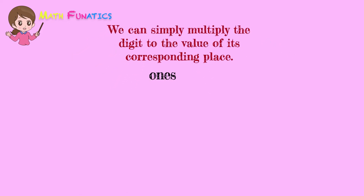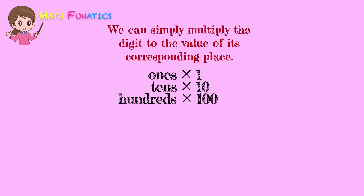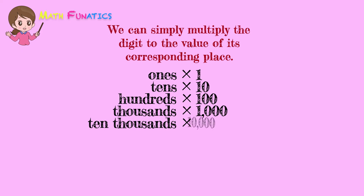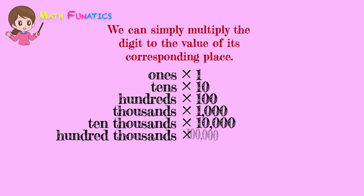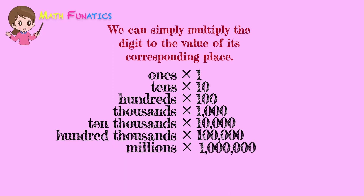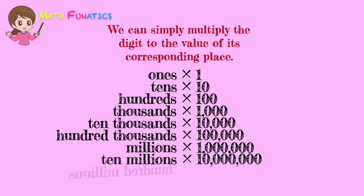So the ones digit is multiplied by 1. The tens digit is multiplied by 10. The hundreds digit is multiplied by 100. The thousands digit is multiplied by 1,000. The ten thousands digit is multiplied by 10,000. The hundred thousands digit is multiplied by 100,000. The millions digit is multiplied by 1,000,000. The ten millions digit is multiplied by 10,000,000. And the hundred millions digit is multiplied by 100,000,000.